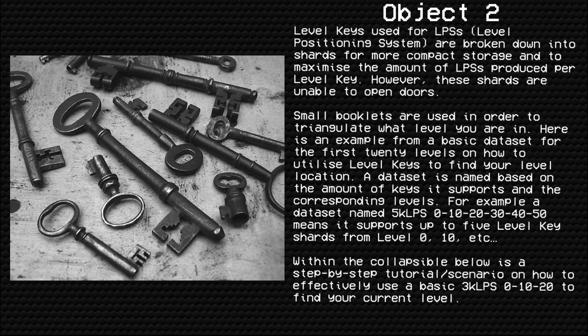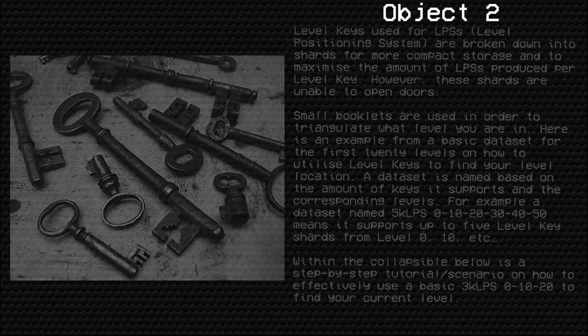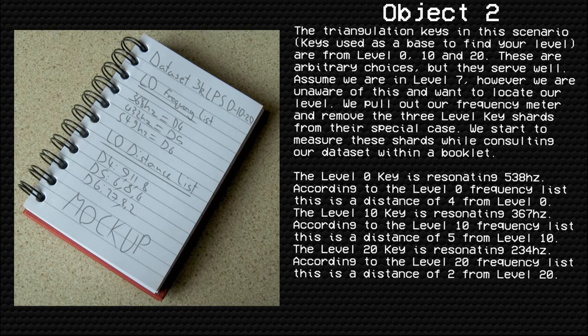However, these shards are unable to open doors. Small booklets are used to triangulate what level you are in. A data set is named based on the number of keys it supports and the corresponding levels — for example, a data set named '5K LPS 0 10 20 30 40 50' means it supports up to 5 level key shards from levels 0, 10, 20, etc. The following is a step-by-step scenario on how to use a basic 3K LPS 0 10 20 to find your current level. The triangulation keys in this scenario are from levels 0, 10, and 20 — arbitrary choices, but they serve well.